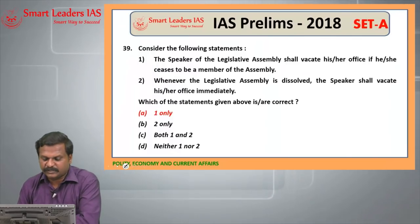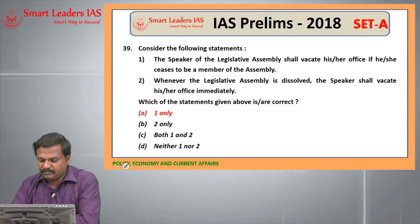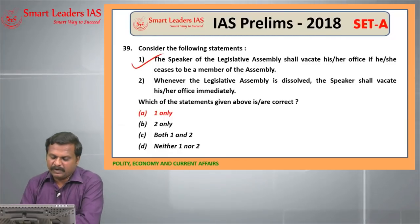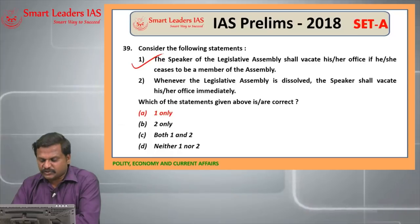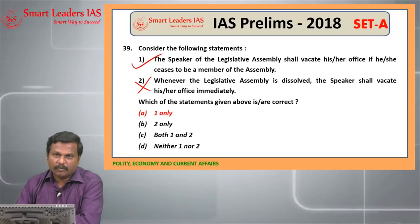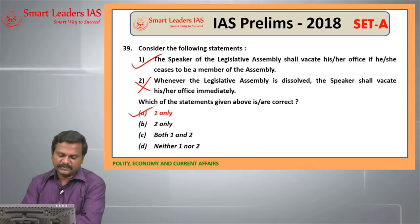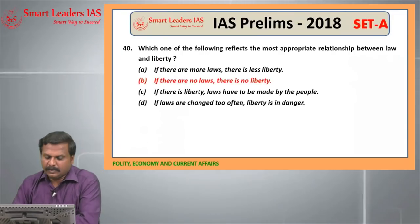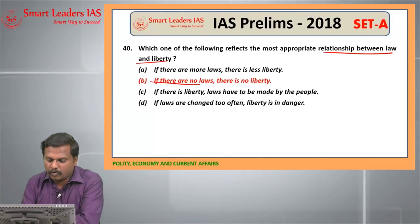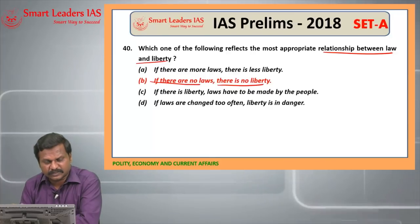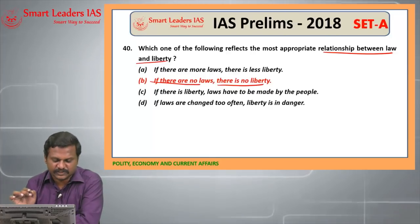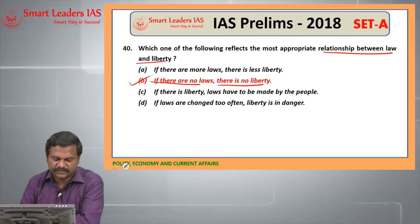39th question: the Speaker of the Legislative Assembly shall vacate his office if he ceases to be a member of the Assembly — this is a right statement. But when the Assembly is dissolved, he need not vacate immediately — so this is a wrong statement under Article 179. So the answer is 1 only. 40th question: the relation between law and liberty — if there are no laws, there is no freedom, there is no liberty. This is a statement made by John Locke in the 17th century. So B is the right answer for the 40th question.